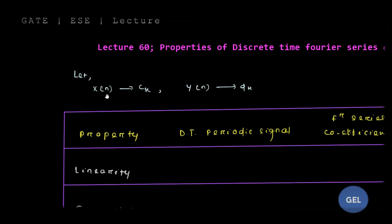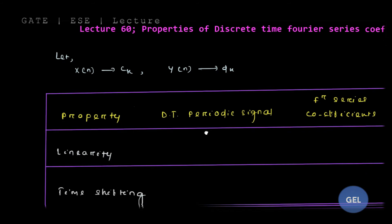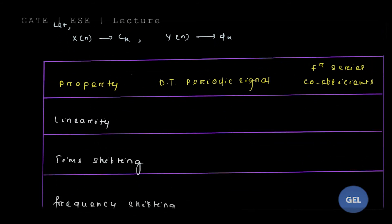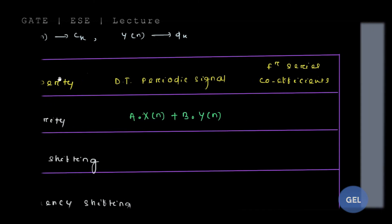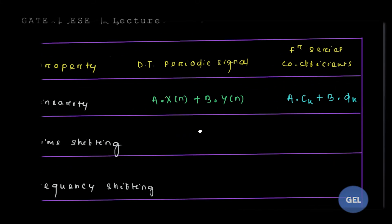Consider a discrete-time signal x(n). Its Fourier series expansion gives Fourier series coefficient CK. Similarly, for the periodic signal y(n), the Fourier series coefficient will be DK. With this notation, the linearity property states: if you take a·x(n) + b·y(n), then the subsequent Fourier series coefficient will be a·CK + b·DK.